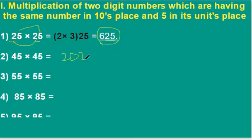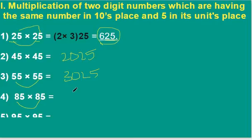Therefore our answer is 2025. Here, 5 into 6 is 30, and last two digits are 25, therefore our answer is 3025. Here, 8 into 9 is 72, and last two digits are 25, therefore our answer is 7225. If we do calculations by the normal method, we get the same answer.